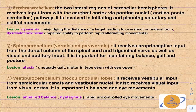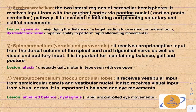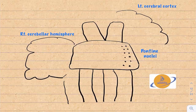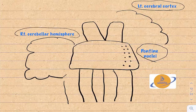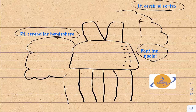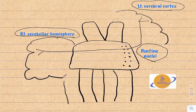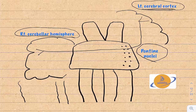The cerebrocerebellum is named because it connects with the cerebral cortex. The two lateral regions of the cerebellar hemispheres receive input from the cerebral cortex via the pontine nuclei, through the corticopontocerebellar pathway, involved in initiating and planning voluntary and skillful movements. For example, the left cerebral cortex connects to the left pontine nuclei, then crosses the midline to reach the right cerebellar hemisphere — explaining why the cerebellum controls the ipsilateral side of the body.